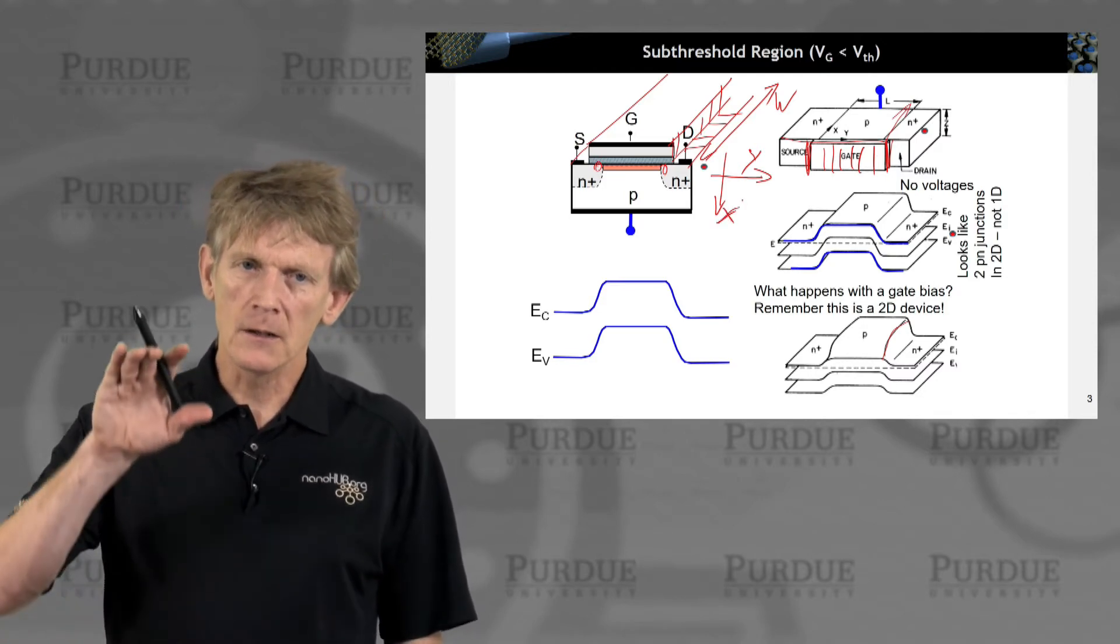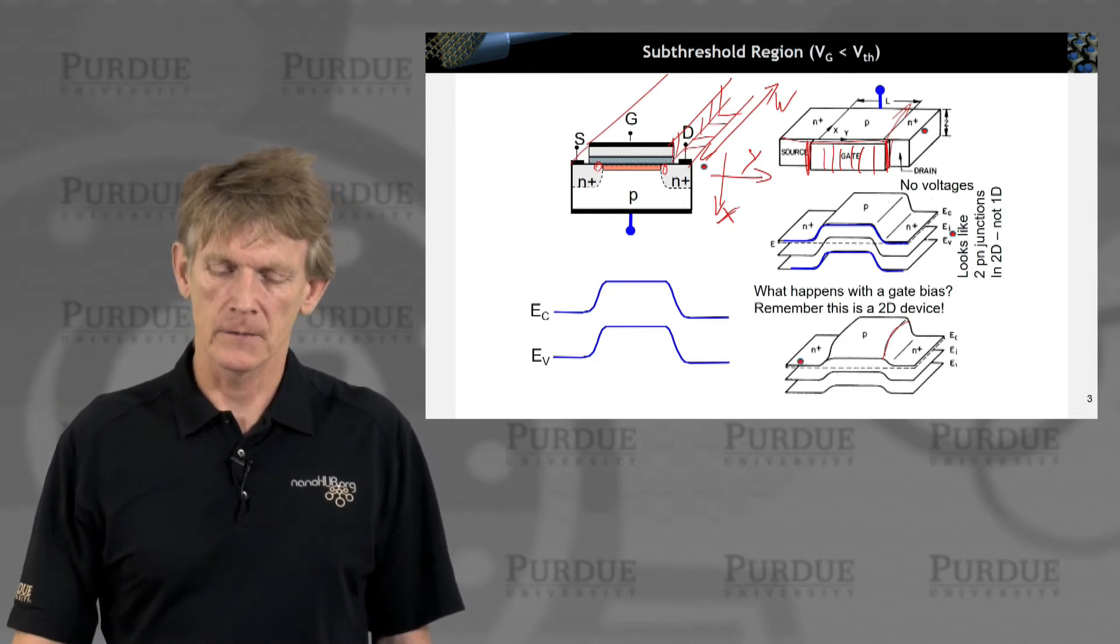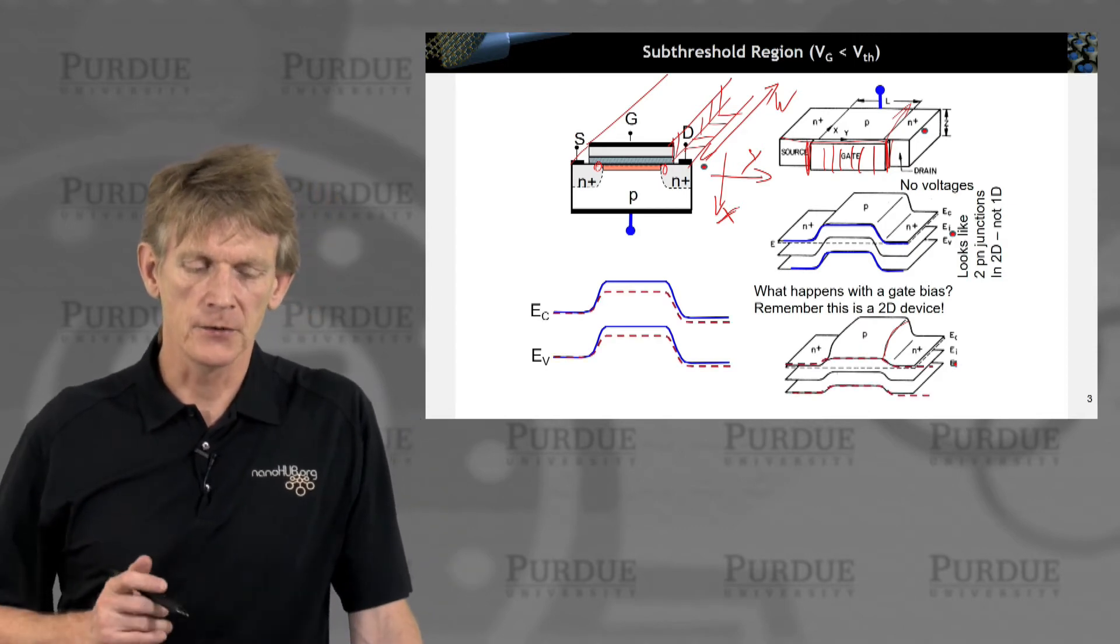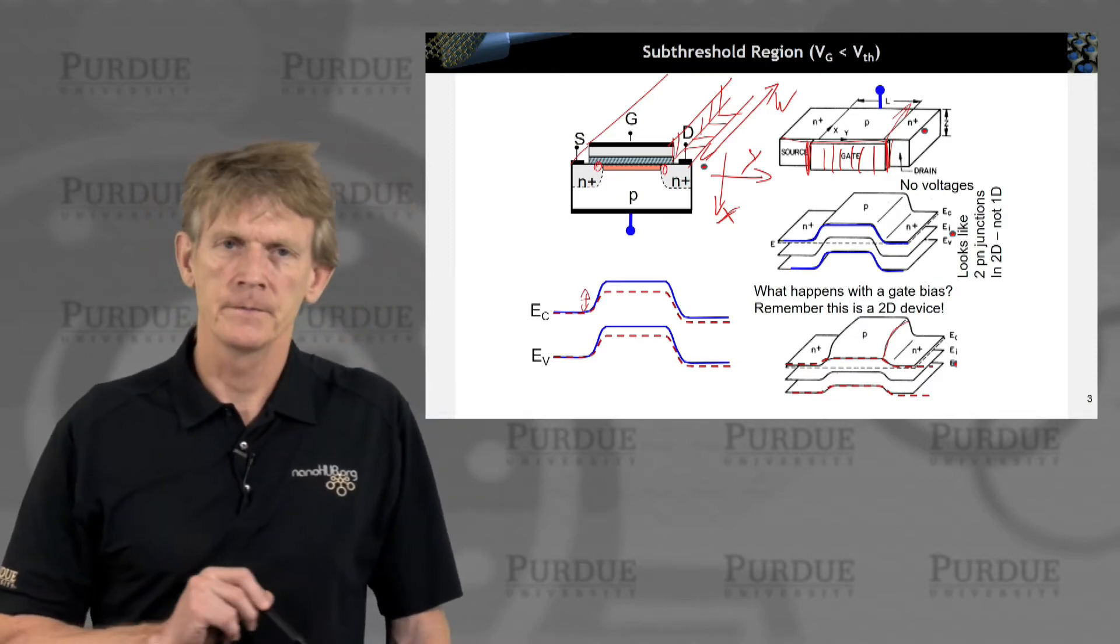So you're building in a ramp, so to speak, closer to the gate, you lower the barrier. So you lower the barriers for electrons to flow like this. And if you compare the two, this barrier for electrons got lowered.